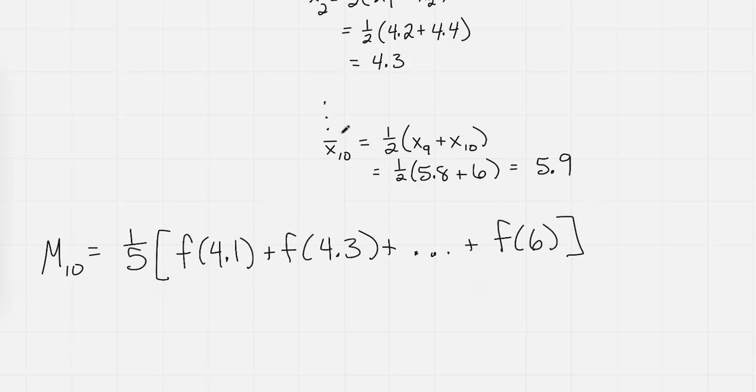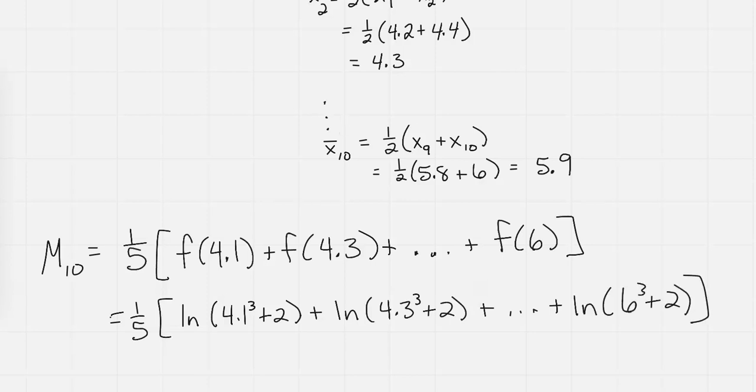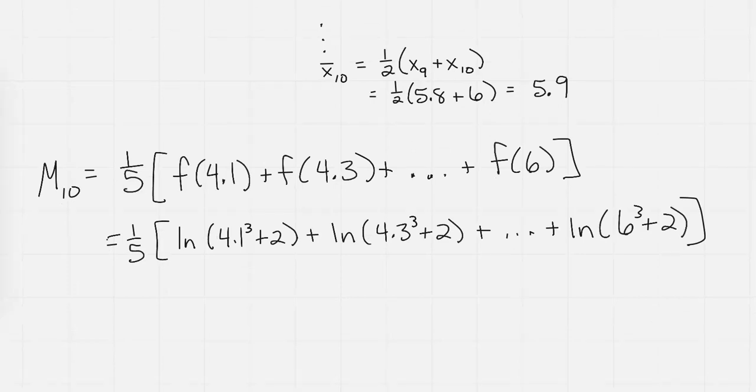And so it's going to take all those midpoints, and if I put this into what f actually is, it's 1 fifth times the bracket, or in bracket, natural log of 4.1 cubed plus 2, plus natural log of 4.3 cubed plus 2, plus all the way down to natural log of 5.9 cubed plus 2. And notice the difference between the other rules where there's coefficients - these have no coefficients. And I'm going to, again, do my calculations in Google Sheets.